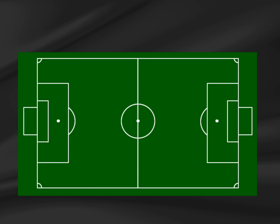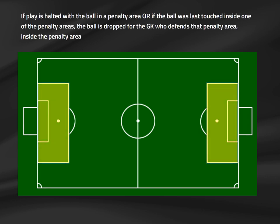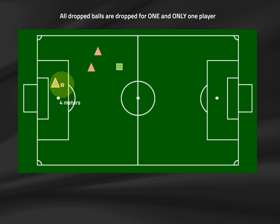Where is the ball dropped when a dropped ball is used? In most cases, the ball is dropped at its location when play was halted, for one player of the team that last touched the ball. However, if play is halted with the ball inside a penalty area, or if the ball was last touched inside a penalty area, the ball is dropped inside that penalty area for the goalkeeper who defends it. Every dropped ball is dropped for one and only one player. All other players must be a minimum of four meters away.